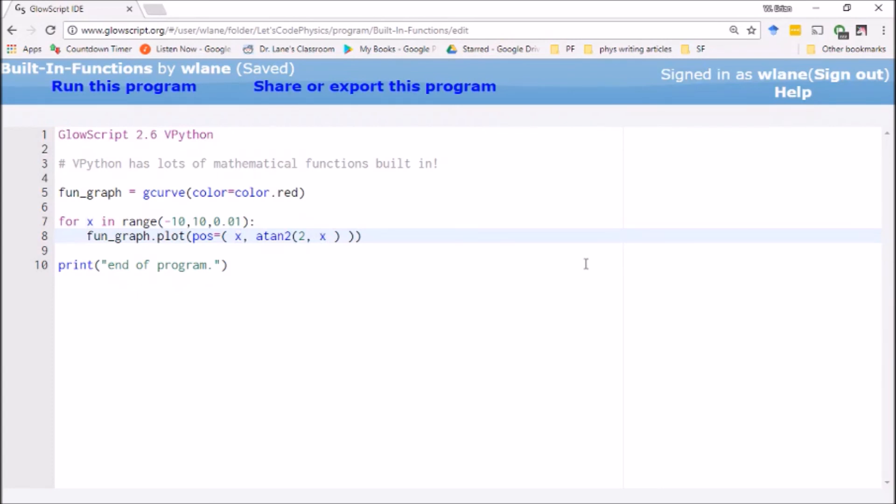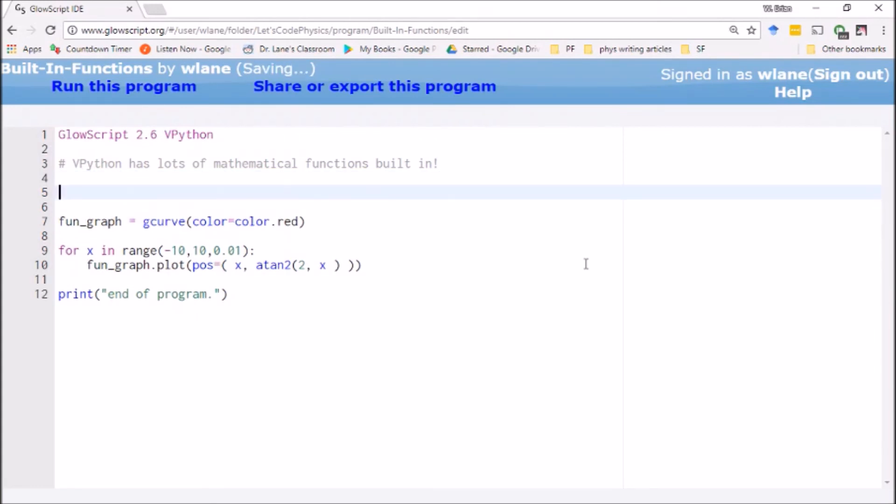If you remember from a high school trig class, sine, cosine, and tangent are not the only trig functions. There are also these weird things called the secant, the cosecant, and the cotangent. I will be completely honest with you. In my 20 years of working with physics, I have used these functions maybe once or twice. But if you wanted those, vPython does not have them built in. And you would have to define a new function for those.